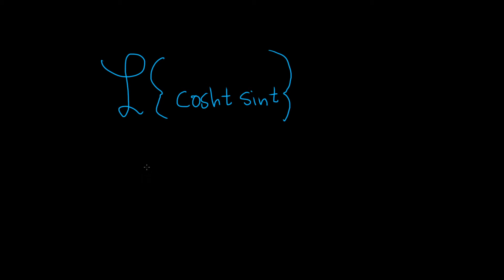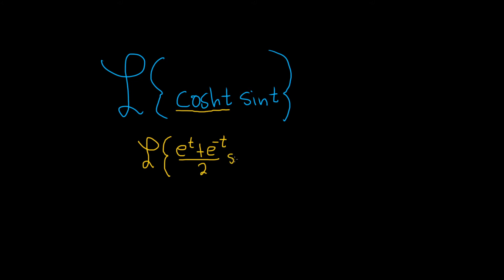In this problem, we're being asked to find the Laplace transform of the hyperbolic cosine of t times the sine of t. To do this, we're going to use the definition of hyperbolic cosine. Cosh(t) is equal to the average of e to the t and e to the negative t — you add them up and divide by 2. That's the definition of cosh, and then we still have the sine function.